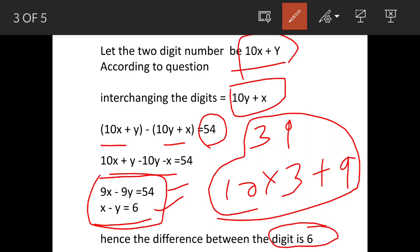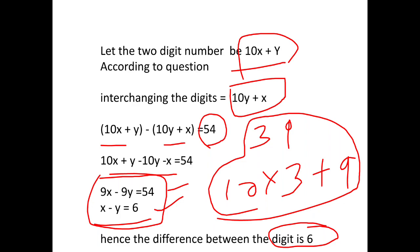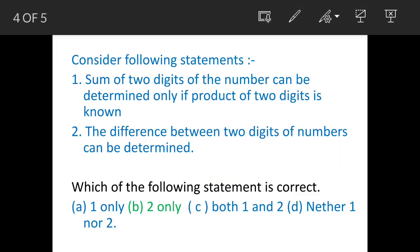Now individual numbers we cannot find out further because only one unknown condition is given, so that means statement 2 only is correct. Let us go to the answer options. This is not possible because we cannot work out x and y. But x minus y we could find out, while the individual values of x and y we could not find out.